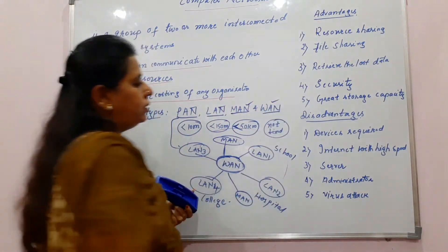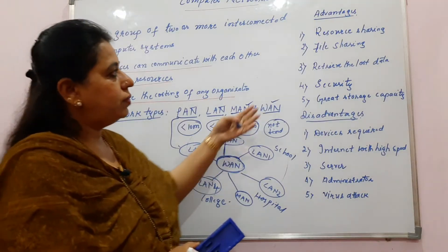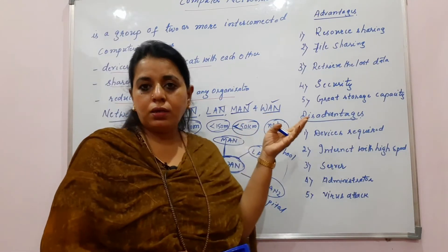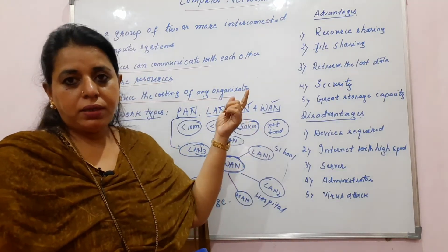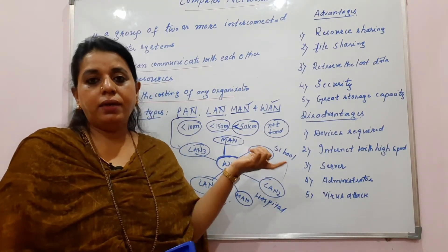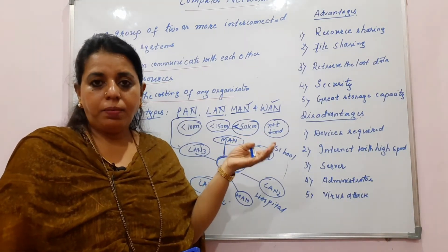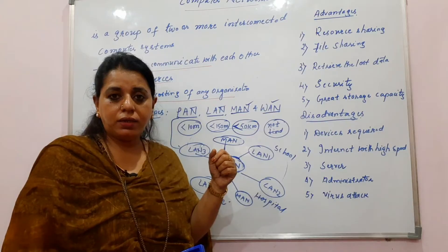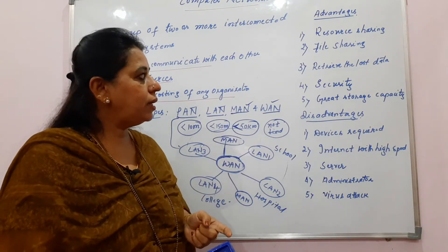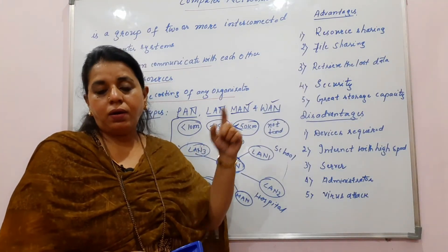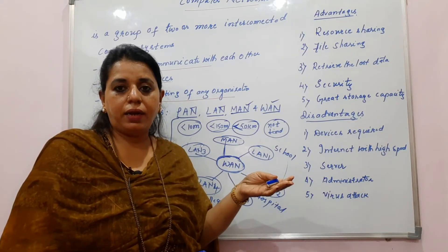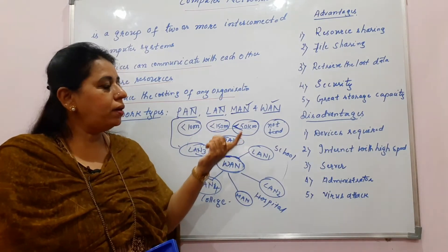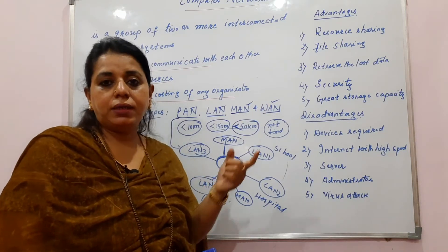PAN, LAN, MAN, and WAN — these are the four different types of networks. Now, what are the advantages of networks? Resource sharing is the very first advantage: you can connect printers and scanners to the network and share those resources. File sharing is another advantage — files can be shared among all different users connected in the computer network. Also, lost data can be retrieved from the server, so there is always a backup available.